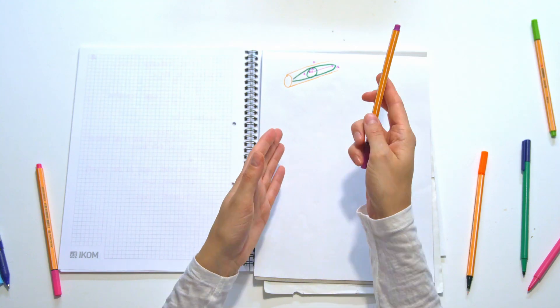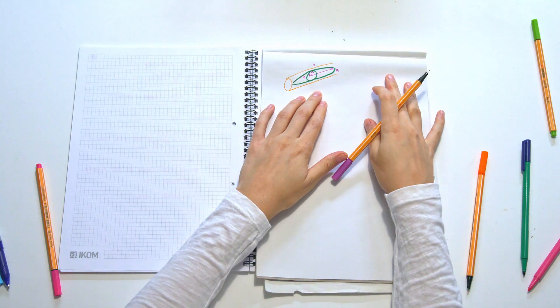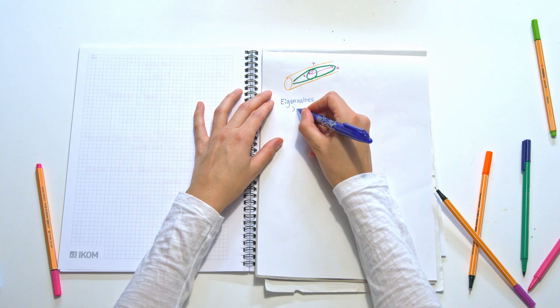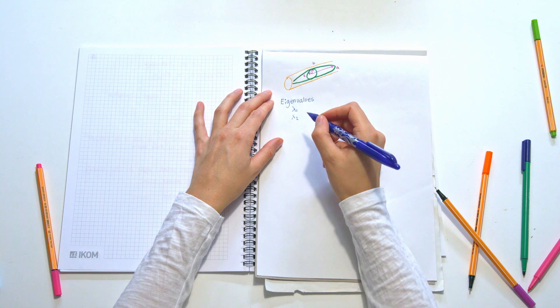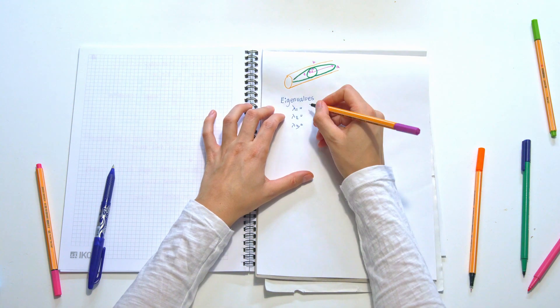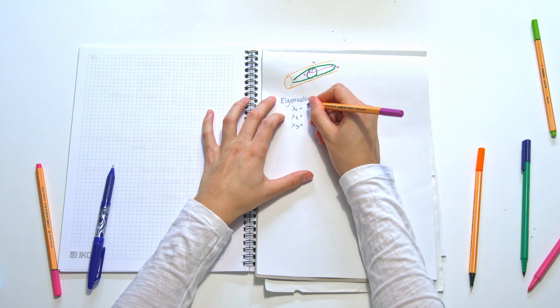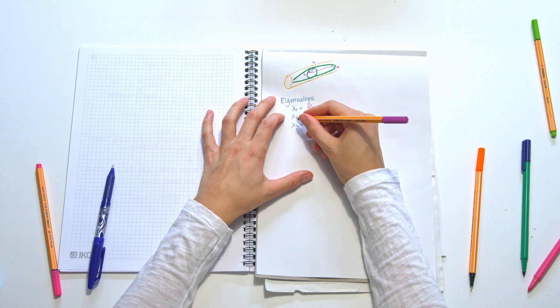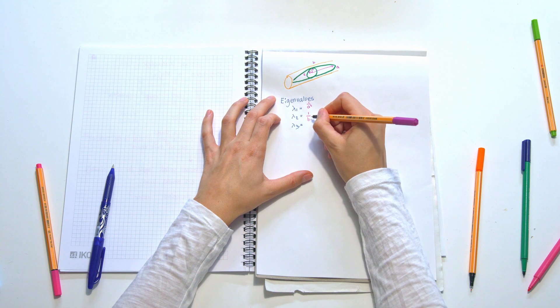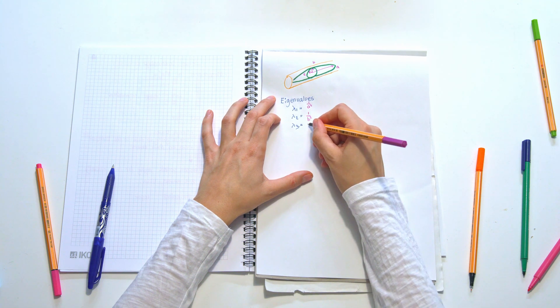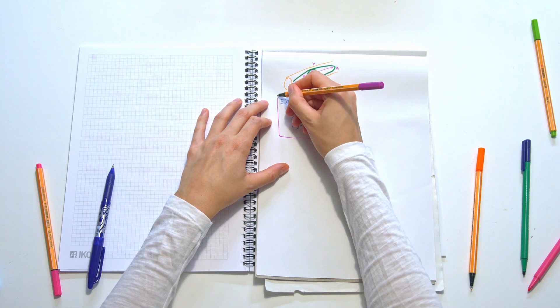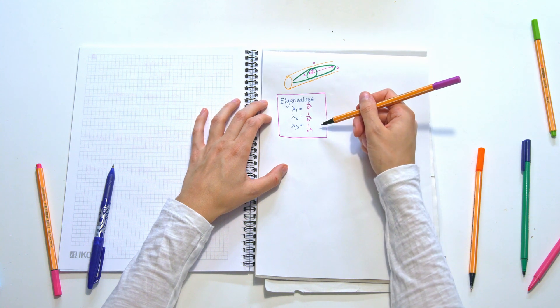This is why we're using the Hessian to get these values out from the second order local structure of this vessel. We can get out the eigenvalues from that. We will call them lambda 1, lambda 2, and lambda 3. So lambda 1 is 1 divided by the square of a squared, lambda 2 is 1 over b squared, and lambda 3 is 1 over c squared.